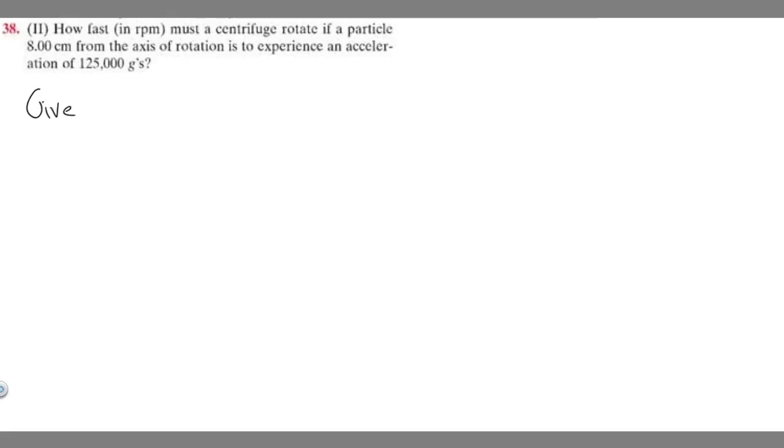In this problem, we're told to find how fast in RPM a centrifuge must rotate if a particle 8 centimeters from the axis of rotation is to experience an acceleration of 125,000 Gs. So before we start, let's write down what we're given. They tell us it's going to rotate with a particle 8 centimeters from the axis of rotation.